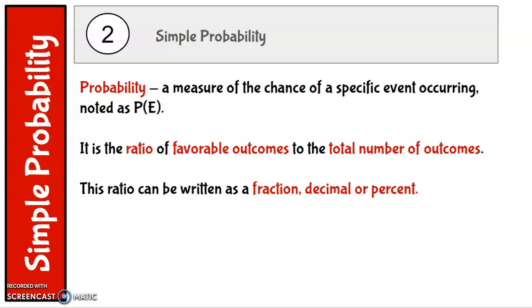Probability is the measure of a chance of a specific event occurring. How likely is it that something's going to occur? And it's noted as P(E). And this would mean the probability of E happening. It's the ratio of favorable outcomes to the total number of outcomes. This can be written as a fraction, decimal, or percent.